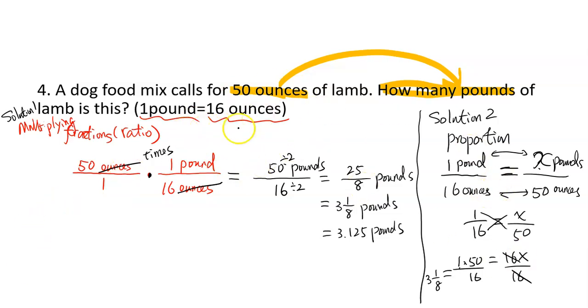If you understand the relationship well, you can see without doing these two methods, you can see 50 divided by 16, and then you don't have to use any of these methods.